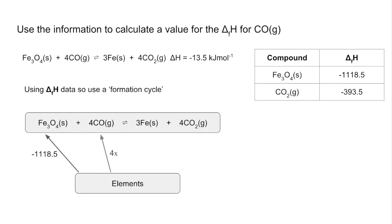The next line is the unknown so that's for four moles of carbon monoxide so that's going to be 4x I'll call it. We don't need a value for iron because iron's an element anyway so there's no enthalpy change of formation.